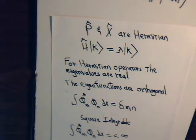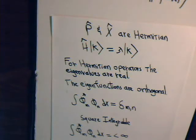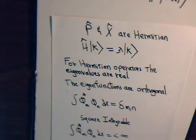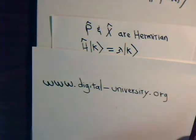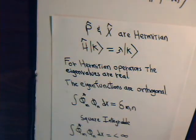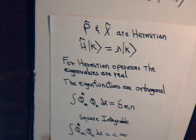If you have a Hermitian operator or any kind of operator and you're wondering how to find its eigenfunctions and eigenvalues, in some of our earlier videos we showed how operators and matrices — when the operator is expressed with respect to a certain basis — you get a matrix out of it. If you go to the website at digital-university.org and click on the playlist for the linear algebra series, I think it's videos 15 and 16, where we show how you can find a matrix's corresponding eigenvalues and eigenfunctions.